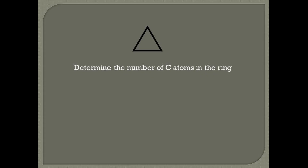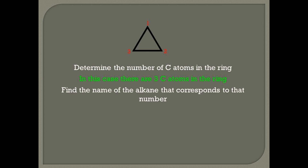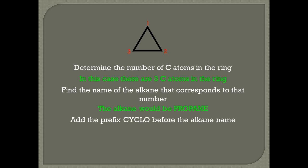Rule 1. First, determine the number of carbon atoms in the ring. In this case, there are three carbon atoms in the ring. Find the name of the alkane that corresponds to that number — for three, it's propane. Because this is a cyclic compound, a ring, we must add the prefix cyclo before the alkane name. Therefore, this cycloalkane is called cyclopropane and not propane.